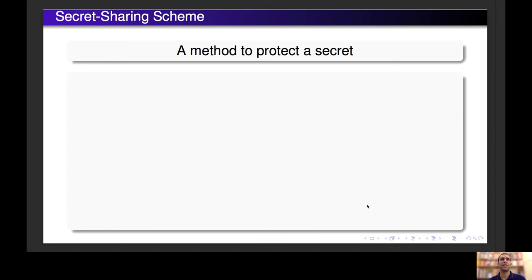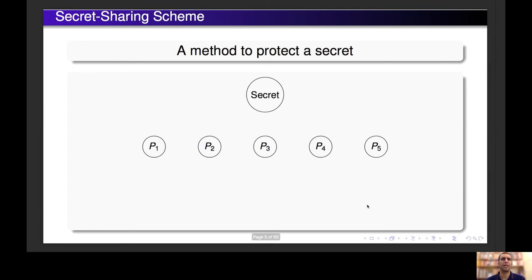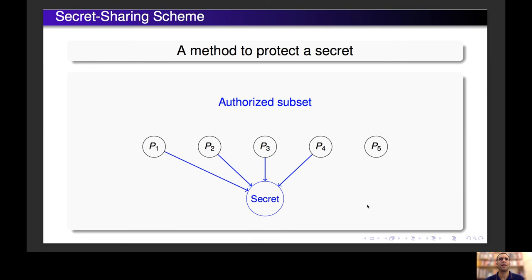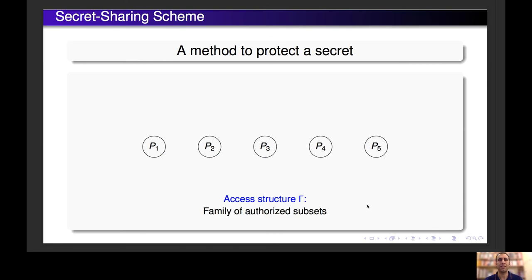Secret Sharing Schemes can be seen as a method to protect a secret in which we generate some shares from a secret. In order to facilitate the description of the scheme, we consider that there are some participants and each participant holds one of these shares, and there's a special participant called the dealer who holds the secret. From the secret and some randomness, the dealer generates some shares, and each participant gets one share. These shares are generated in such a way that some coalitions of participants can recover the secret from their shares. These subsets of participants are called Authorized, and the family of Authorized Subsets is the Access Structure of the Scheme.